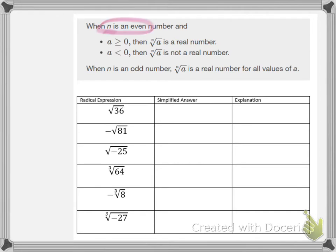Let's begin with when our index n is an even number. So let's take our first radical expression: the square root of 36. Now 36 is the radicand, and 36 is greater than 0, so we will be looking at the first bullet in the property above. When our radicand is greater than 0 our radical expression is a real number.